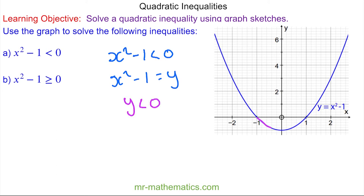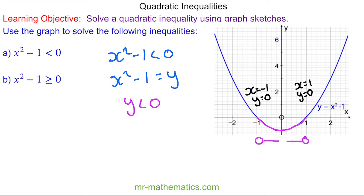These are the points below the x-axis. You can see on the graph that when x is equal to negative one, y is equal to zero, and when x is equal to positive one, again y is equal to zero. So the solutions to our inequality are when x is less than one but greater than negative one.